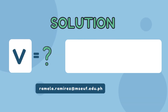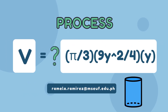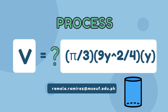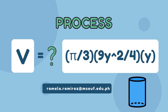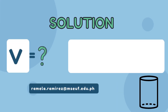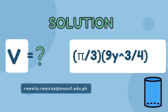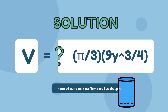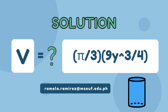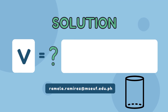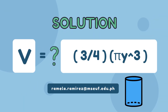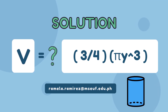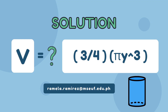Simplifying: the volume equals one-third of pi times 9y² divided by 4, multiplied by y. This reduces to one-third times the quantity 9y³ divided by 4, which simplifies to V equals three-fourths pi times y cubed, or V = (3π/4)y³.